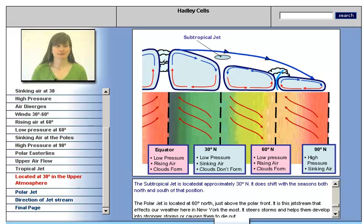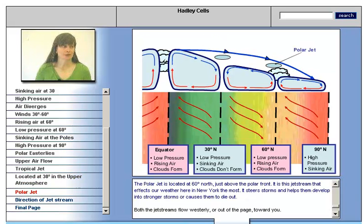The subtropical jet is located at approximately 30 degrees north and shifts with the seasons both north and south of that position. The polar jet is located at 60 degrees north, just above the polar front. It is this jet stream that affects our weather here in New York the most. It steers storms and helps them develop into stronger storms or causes them to die out.